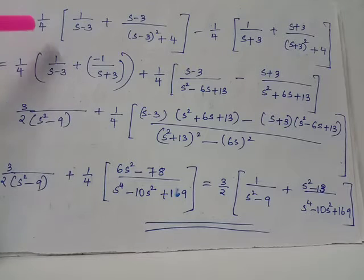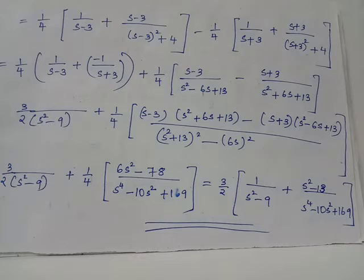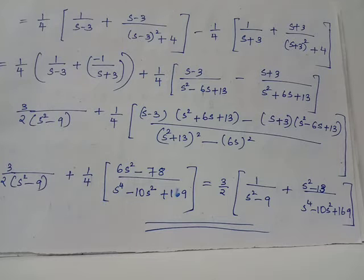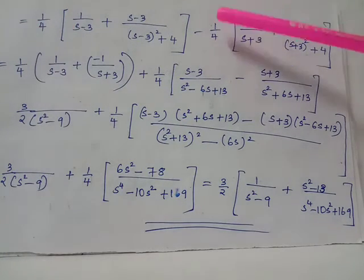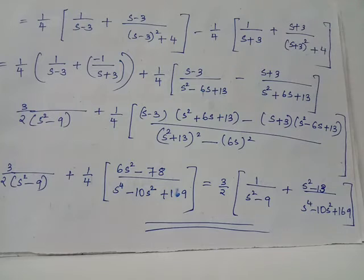Thus we obtain: (1/4)·[1/(s−3) + (s−3)/((s−3)² + 4)] minus (1/4)·[1/(s+3) + (s+3)/((s+3)² + 4)]. We can group the terms 1/4 · 1/(s−3) and −1/4 · 1/(s+3) together.